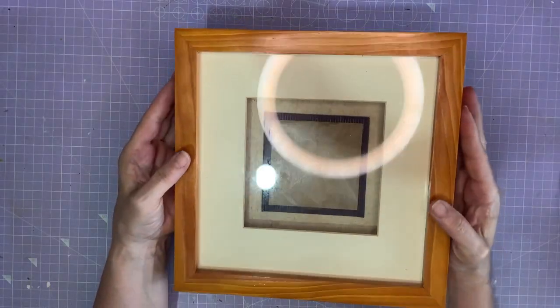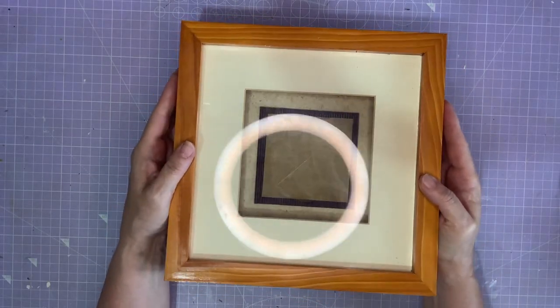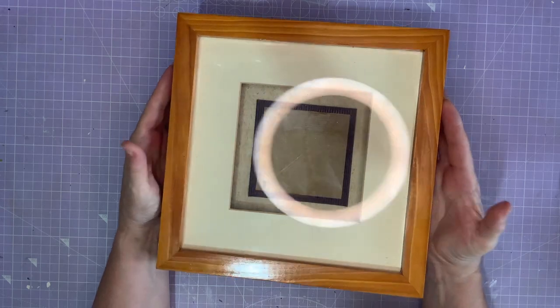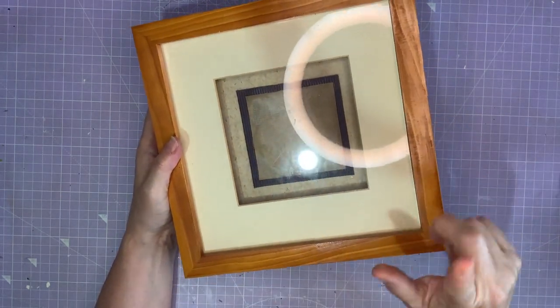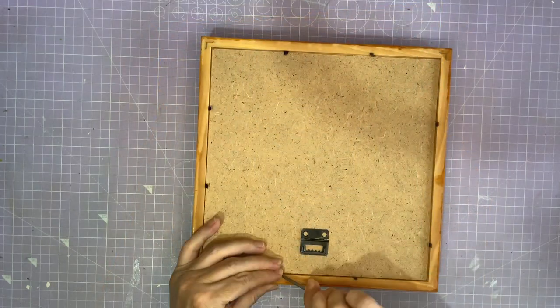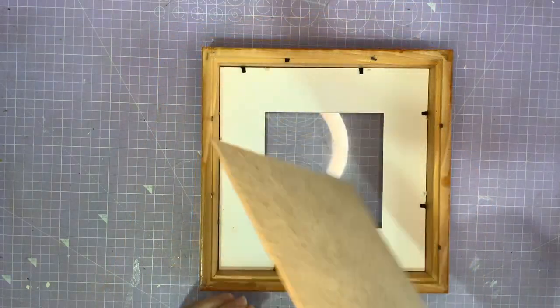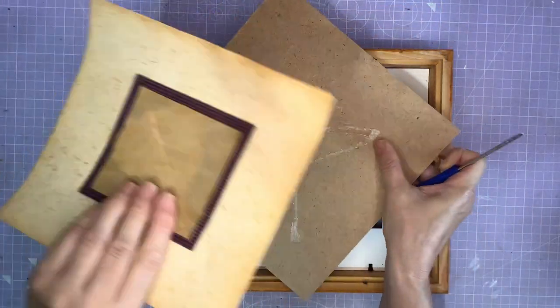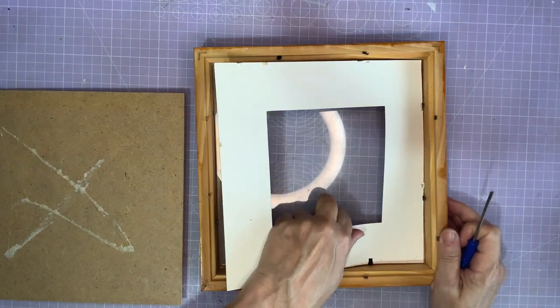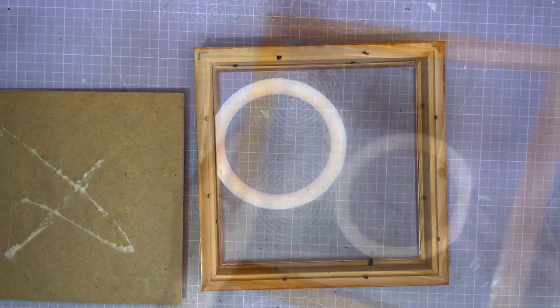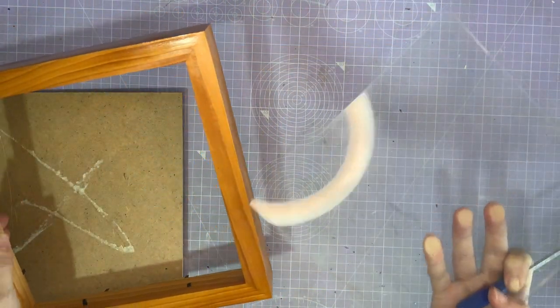For this craft I'm going to use this photo frame. And I've got one of these shadow box depth ones because I want something with a bit of depth. Take the back off the frame. And then take this off the back. Remove the mount. And remove the glass. We won't be needing that.